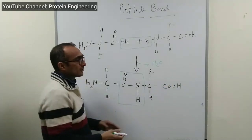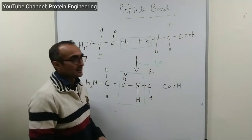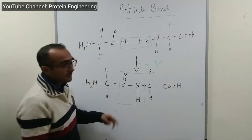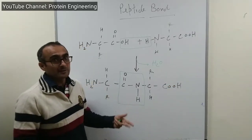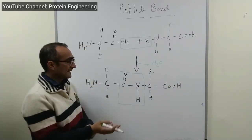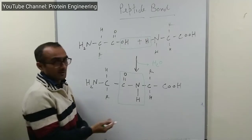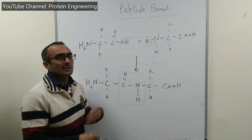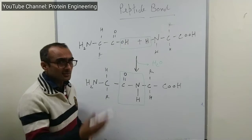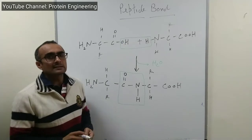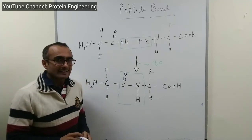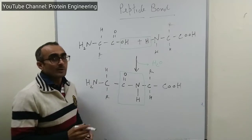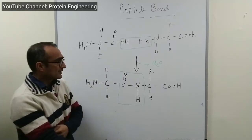Similarly, the carboxyl group will react with the amino group of another amino acid to give rise to another peptide bond, and that product will be called a tripeptide. The minimum is a dipeptide. When you talk about polymers of amino acids, you have tripeptide, tetrapeptide, and so on. All proteins are polypeptide in nature and contain many peptide bonds depending on the protein size.